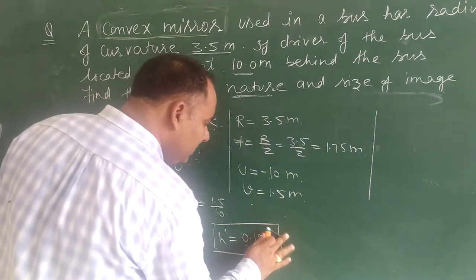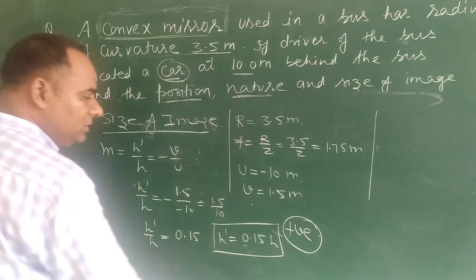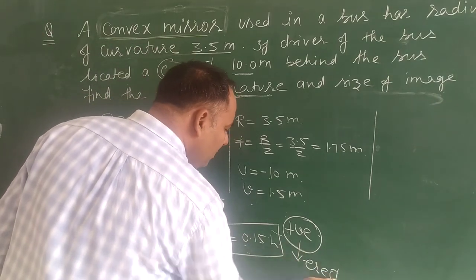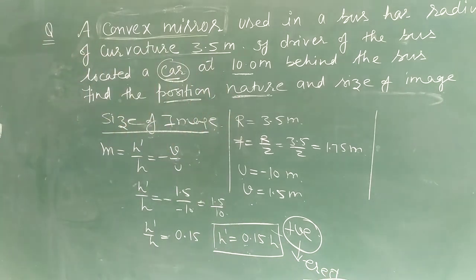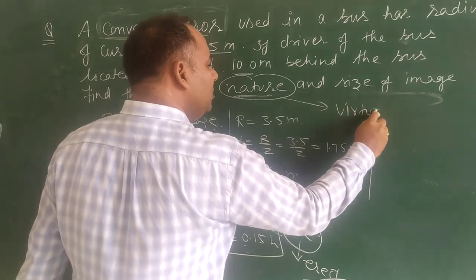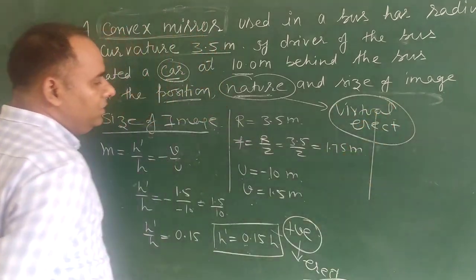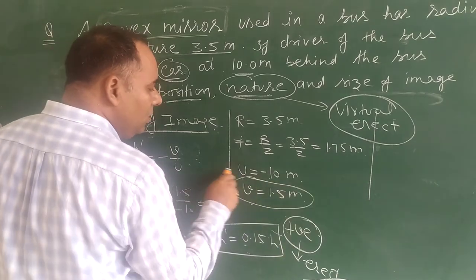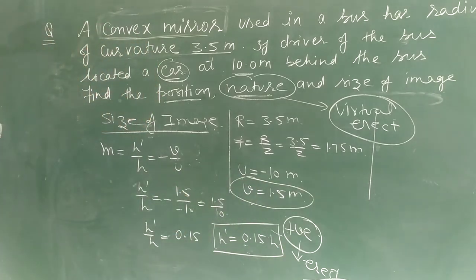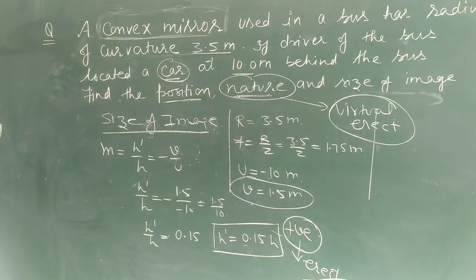Looking at the sign of h', it is positive, which indicates the image is erect. So to summarize: the image formed is virtual, erect, and diminished. The position of the image is 1.5 meters behind the mirror, on the positive side of the pole. Thank you, students.